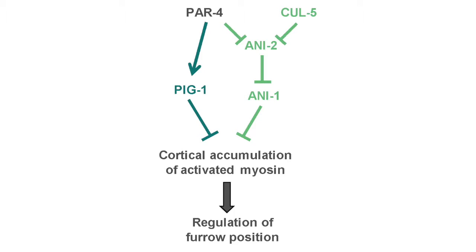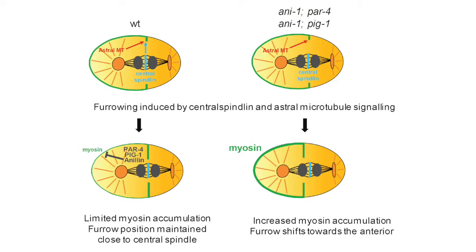In some cells like neuroblasts the spindle and myosin position coincide so they induce furrowing more or less at the same position. But in other cells like in the C. elegans embryo the position of the spindle and myosin do not coincide.